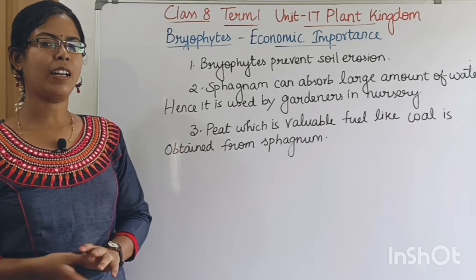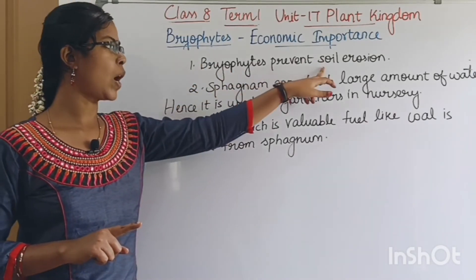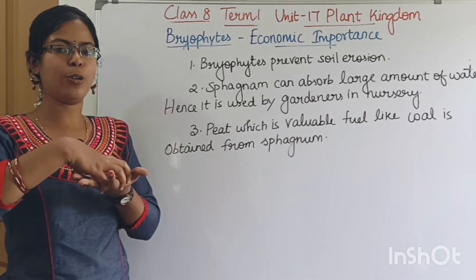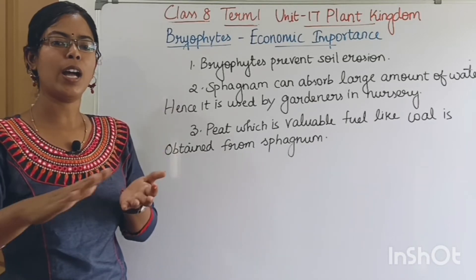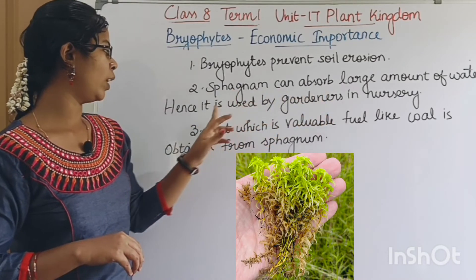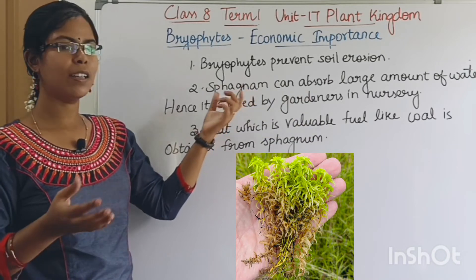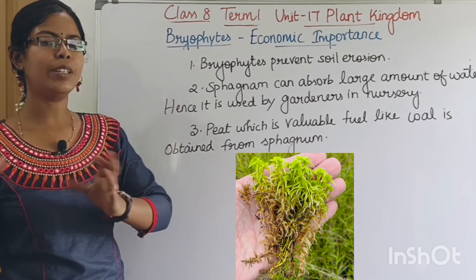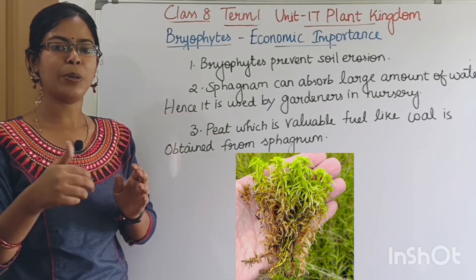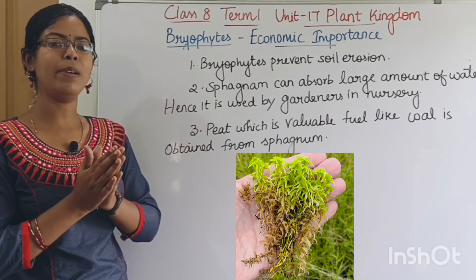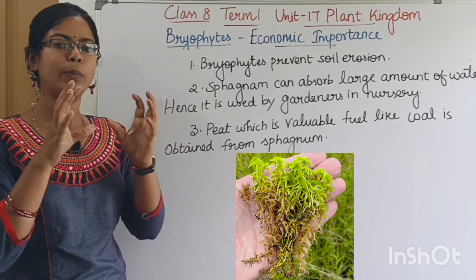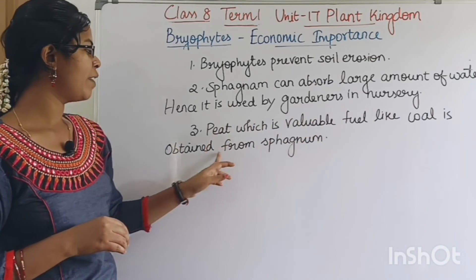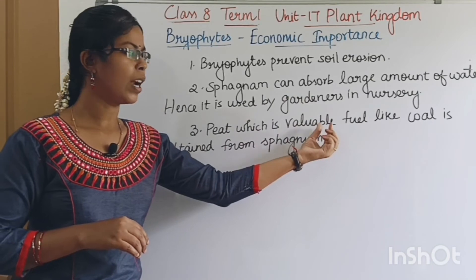Now, let's see the economic importance of Bryophytes. First, Bryophytes prevent soil erosion. Their root-like structures called rhizoids hold soil and rocks together, preventing erosion. Additionally, from Sphagnum peat, you can obtain a valuable fuel like coal.